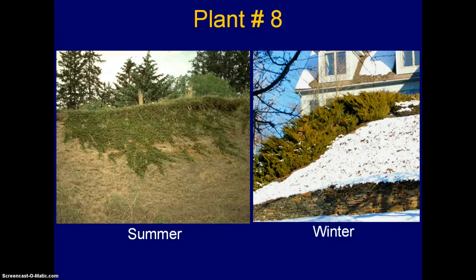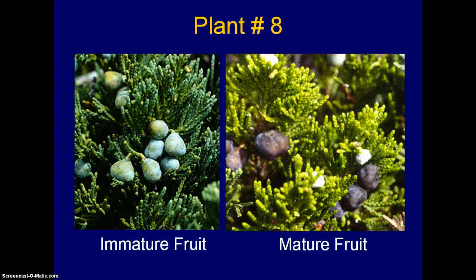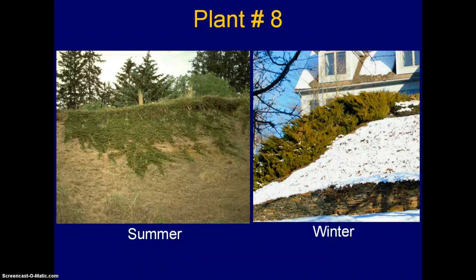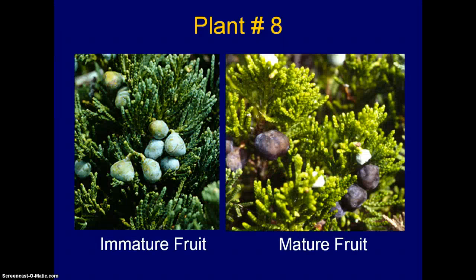Plant number eight: summer and winter. Remember this is a genus, so it's not one species — there's variation, but there's information on this particular genus. Details on the leaves again, where the arrows are pointing at individual leaves. Fruit information: immature on the left, mature on the right. Again, summer and winter shots, leaf detail, and fruit information.